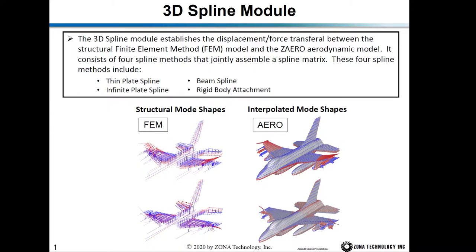The spline module consists of four spline methods that jointly assemble a spline matrix. These four spline methods include the template spline method, influence spline method, beam spline method, and rigid body attachment method. So if you have a mode shape computed by the finite element solver on the structure grid, the spline module can interpolate, spline, or map the mode shape from the structure grid to the aerodynamic panel model.